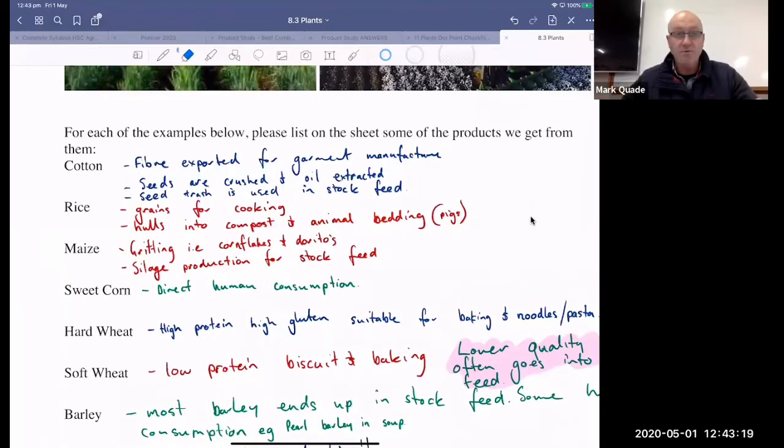Then we've got maize. So maize is corn. So we have different types of maize. So we have gridding maize is like the cornflakes, Doritos, that kind of thing. And then we have silage production. So that's cutting the green plant, mulching it, and then putting it into a big pit to produce silage. Then we have sweet corn, which is direct human consumption. I don't need to explain that. Some maize is harvested straight for ethanol production. So ethanol is a fuel. It's first cousin to alcohol. And our green bowser has 10% ethanol. And a lot of that comes from corn. Not so much in Australia. A lot of our ethanol comes from wheat production as well.